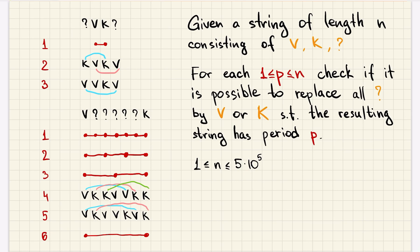For p equals 2 and 3 we can actually replace question marks by v or k. And for p equal to 4 it's always possible because we do not have any restrictions on the string.